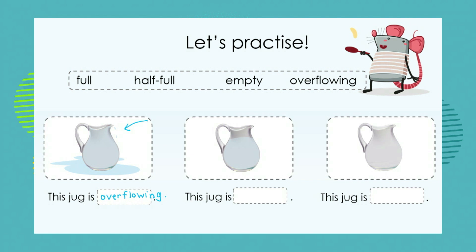We can see that the water is too much for the container and it has spilled over and messed onto the floor, so there is too much water — it is overflowing. If we look at the next jug, how would we describe it — would we say it is full, half full, or empty? This jug is full. If we said half full, the water would only be there halfway, but we can see it is more than half, so it is full.